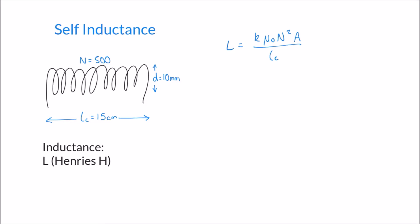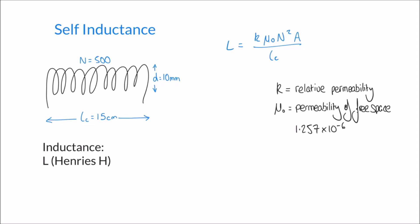Let's look at this formula in a little more detail. First, k is something called the relative permeability — a term we're going to come back to in more detail later on. Secondly, mu-naught is something called the permeability of free space.